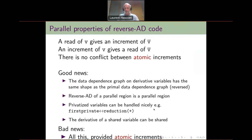Only the direction of the arrows is reversed, but loops and all these have the same shape. As a consequence, the reverse AD of a parallel region is a parallel region. Also, when it comes to all sorts of privatized variables, they can be handled nicely. For example, a first-private primal variable will give birth to a plus-reduction adjoint variable, and vice versa. And the derivative of a shared variable will be a shared variable.